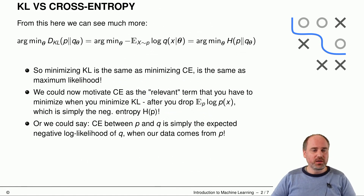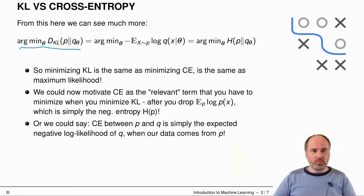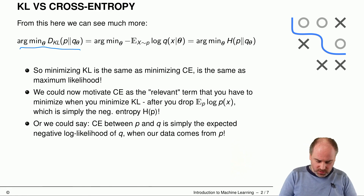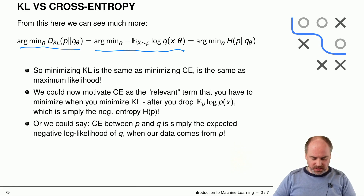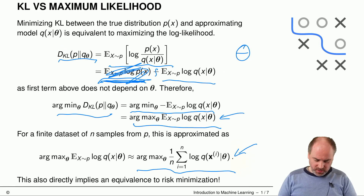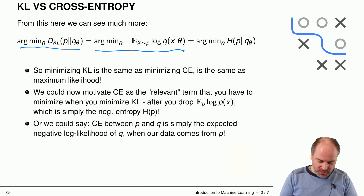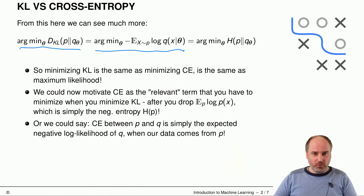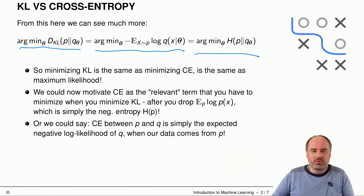Let's take a somewhat closer look. We have this minimization problem of Kullback-Leibler between p and q, which is the same as maximizing this positive expectation — or equivalently minimizing the negative expectation. Looking at what this negative expectation actually is, we can immediately see from the formula that this is simply the cross entropy between p and the parameterized q, which is parameterized by theta.